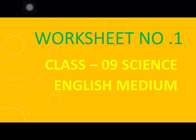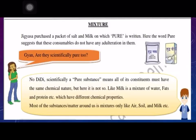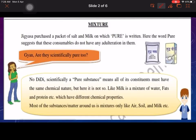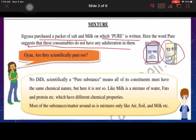Welcome to Class 9 Science. In this worksheet we are going to discuss mixtures. When we purchase different things, we see 'pure' written on them — like pure salt, pure ghee. The word 'pure' suggests these consumer products do not have any adulteration, but are they scientifically pure? No — scientifically, a pure substance means all of its constituents must have the same chemical nature.